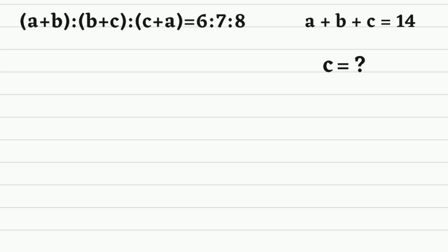Let's see how we can do it. So let's start with the second equation here where we can isolate c. We can rewrite it as c is equal to 14 minus a plus b.